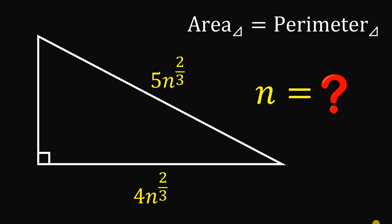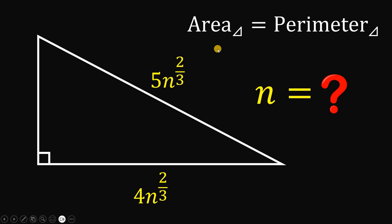For today's video, we will answer a geometry challenge given by one of our followers. The question goes like this: given a right triangle with one leg equal to 4 times n raised to 2/3, and the hypotenuse equal to 5 multiplied by n raised to 2/3, and given that the area of this triangle must equal its perimeter, what is the value of n?